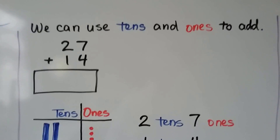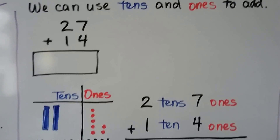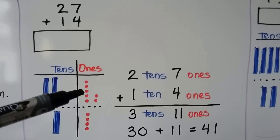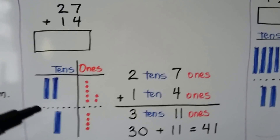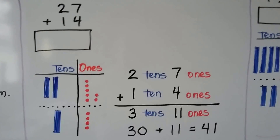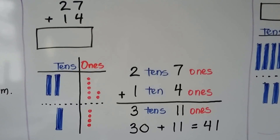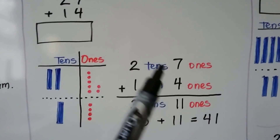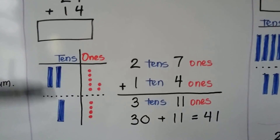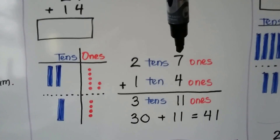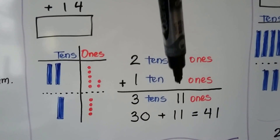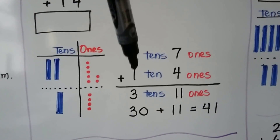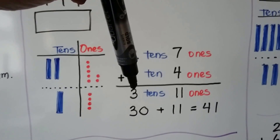We have 27 plus 14. We have two tens and seven ones, and we're adding one ten and four ones. We stack them on top of each other — the ones on top of the ones, the tens on top of the tens. We add the seven ones and the four ones and we get 11 ones. We add the two tens and the one ten and get three tens.